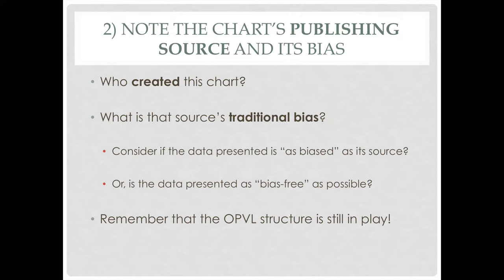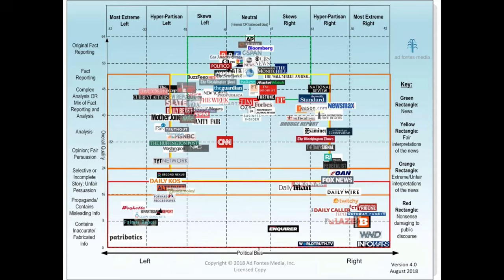Then we have to ask: what data is actually being presented? Is the data being slanted by its source bias, or is the data just numerical and as bias-free as possible? Nothing is perfectly bias-free, but some things are going to be less biased and some more biased. We as readers, learners, and researchers have to understand what we're being presented with. As we talk about sources and their traditional biases, there's an image we often go back to — feel free to stop the podcast and explore it, and see where typical sources you use are located on it.